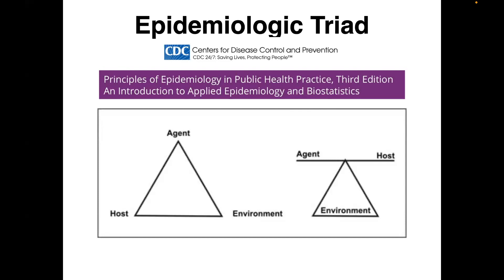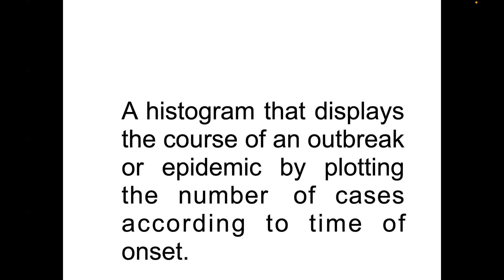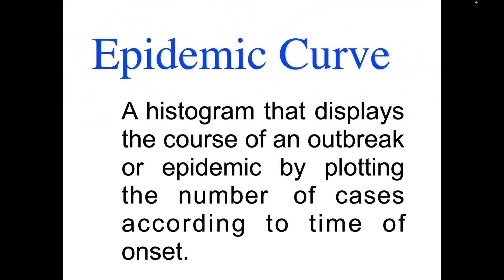Any imbalance with one of the three — whether the agent, the host, the environment, or a combination — would result in disease. A histogram that displays the course of an outbreak or an epidemic by plotting the number of cases according to the time of onset is what we call the epidemic curve.